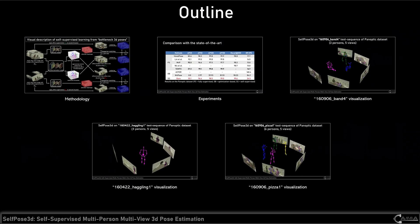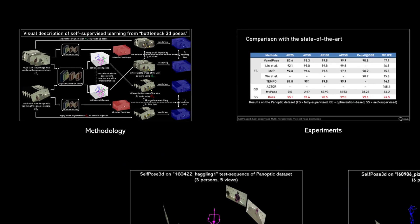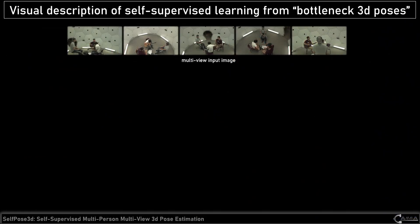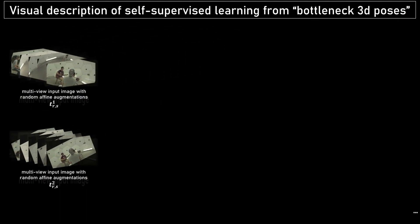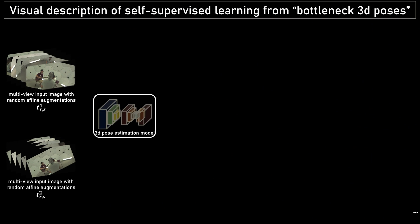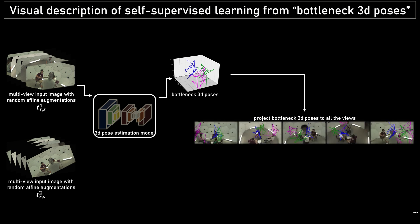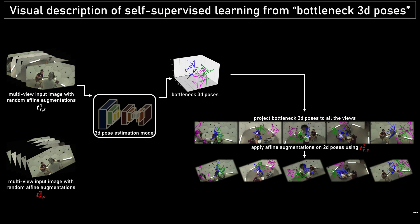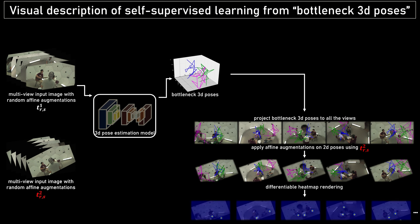Now we will introduce the details of our methodology. Given multi-view input images, we duplicate them into two groups and apply two different affine augmentations respectively. For the first group of images, we pass them through the 3D pose estimation model, obtain the bottleneck 3D poses, project them to each 2D view, and then apply the second group's affine augmentations to obtain the final 2D joints and heat maps.